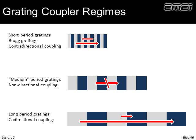We can generalize grating regimes by period. The shortest period gratings produce contra-directional coupling, coupling energy in opposite directions. Medium period gratings produce non-directional coupling. Co-directional coupling requires very long period gratings, because in that case the two propagation constants are very similar, making their difference very small, which means the grating vector is very small and the grating period becomes very large.